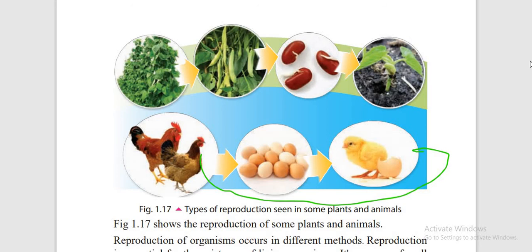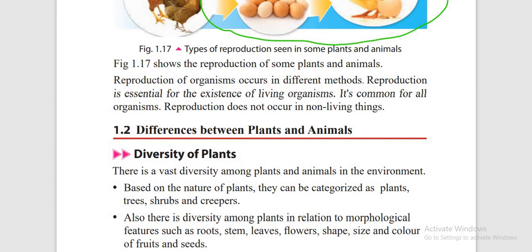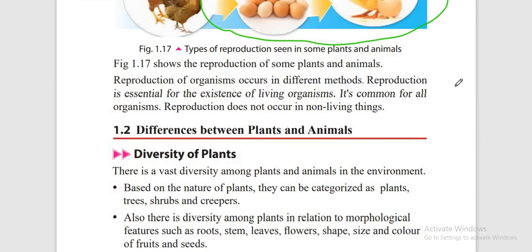Reproduction is essential for the existence of living organisms. If there is no reproduction, living organisms in the world will die. For example, if there is only one hen and it doesn't reproduce — it doesn't lay eggs and produce new chicks — after that hen's death, there will be no hen. So reproduction is essential for the existence of living organisms.